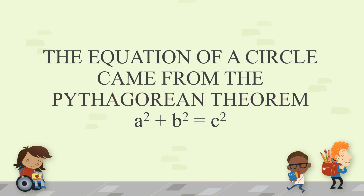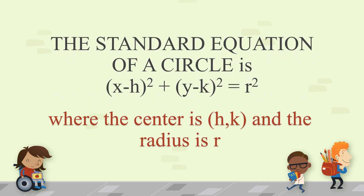The equation of a circle came from the Pythagorean theorem, a squared plus b squared is equal to c squared. Take note that the standard equation of a circle is x minus h squared plus y minus k squared is equal to r squared, where the center is (h, k) and the radius is r. The center can be at the origin, which is (0, 0), or in other parts of the Cartesian plane.